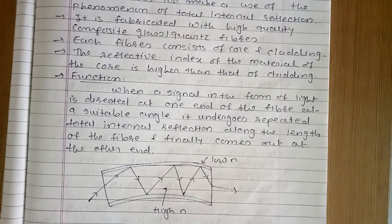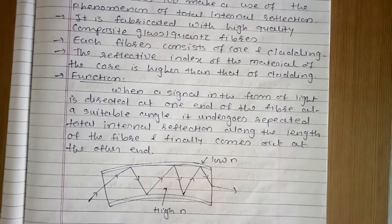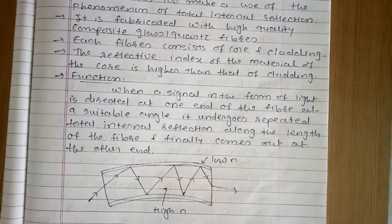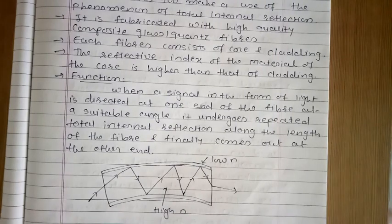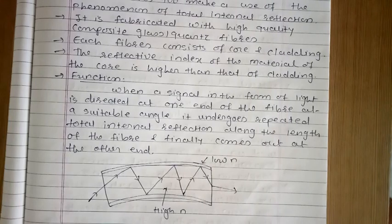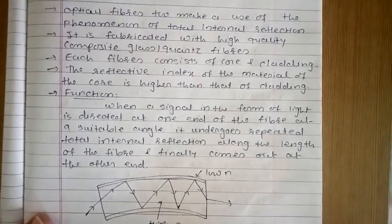In silica glass optical fiber, it is possible to transmit more than 95% of the light over a fiber length of 1 kilometer. So with the use of silica glass fiber, we can transmit light more than 95% over a length of 1 kilometer.